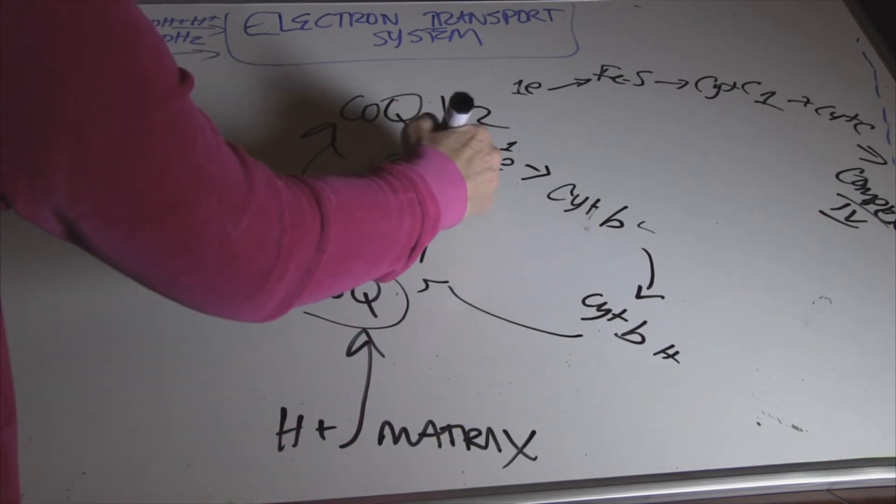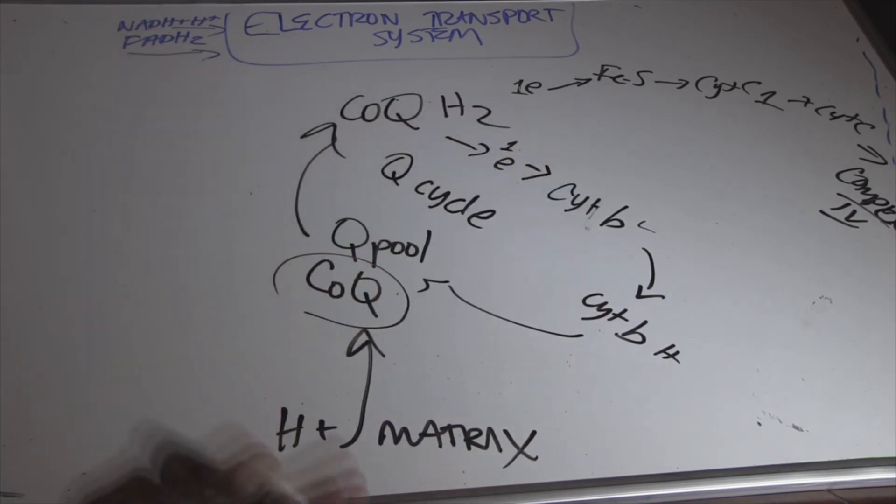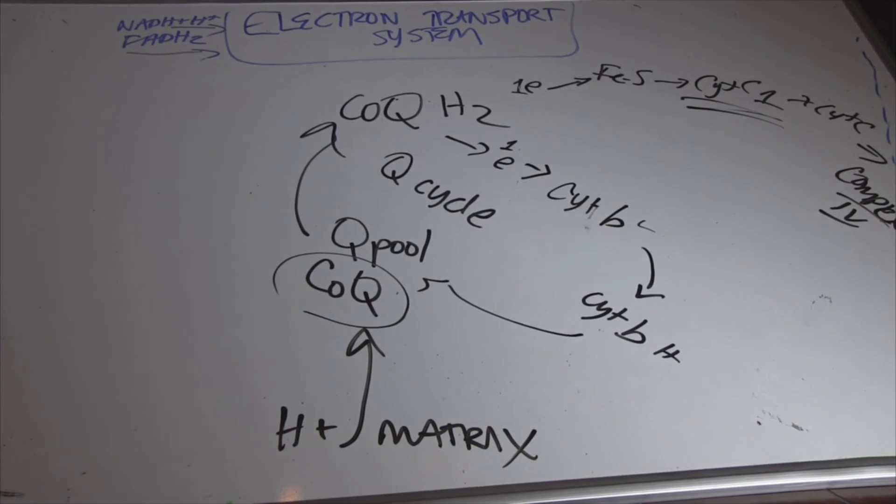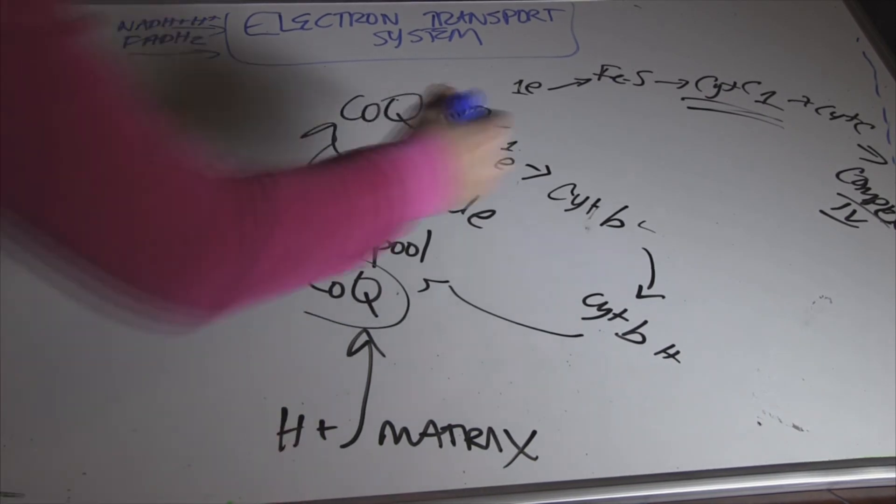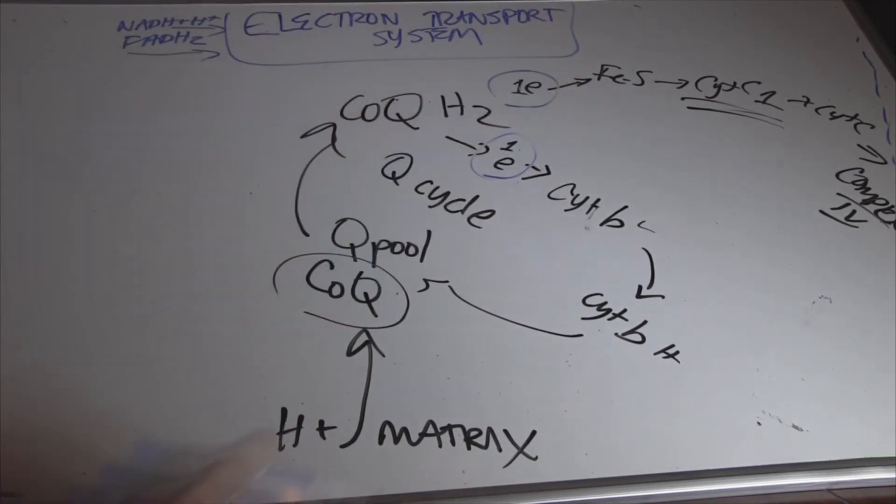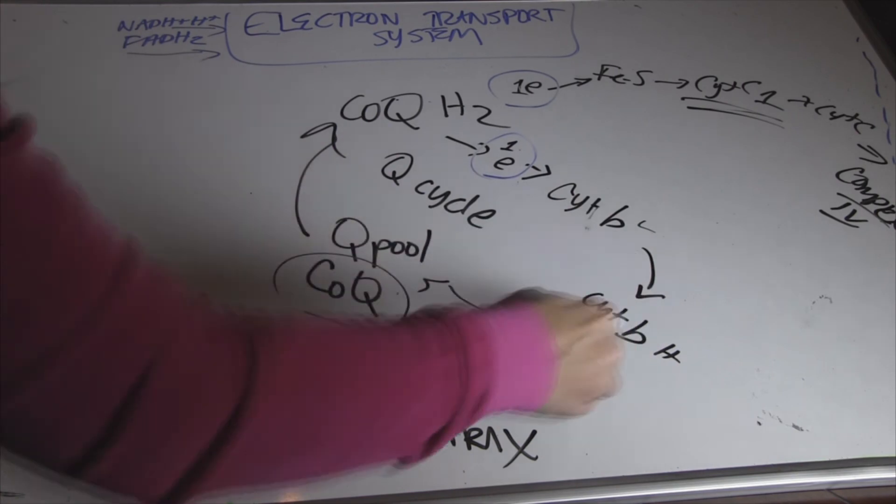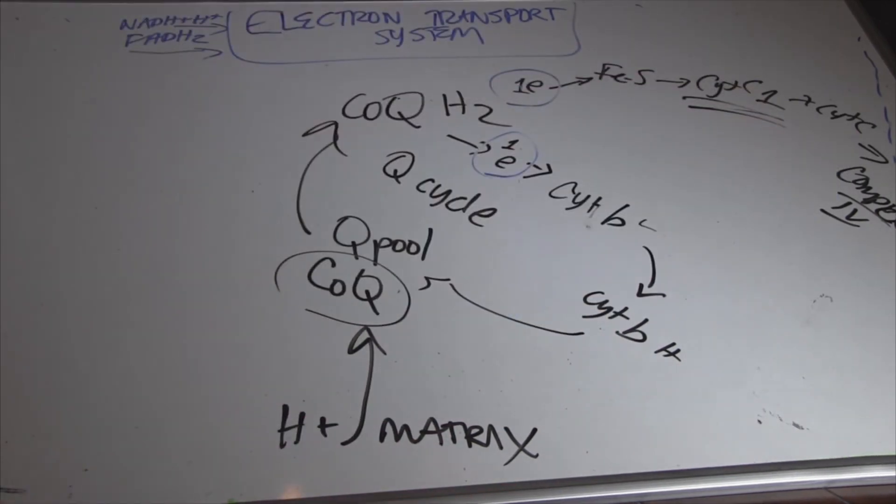This is known as the Q cycle. The reason why the Q cycle has to occur is because this guy can only take one electron at a time. So the other electron, here's the path. You know they come in pairs. Up until this point, we're dealing with two electrons moving. At this point, we have one electron going to the Q cycle and the other electron going into complex 4.